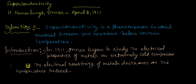What is the basic definition of superconductivity? Superconductivity is a phenomenon in which a material possesses zero resistance — there is no resistance for the current below a certain value of temperature. So this is the basic definition of superconductivity.